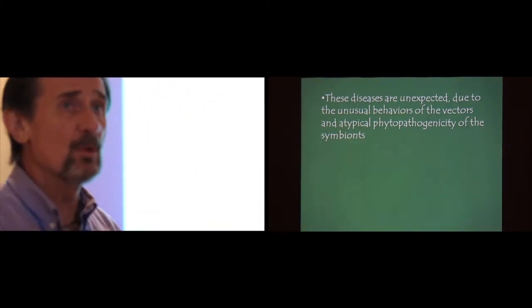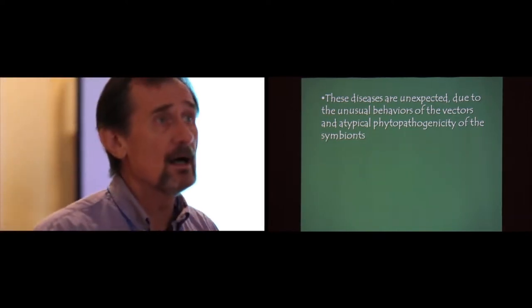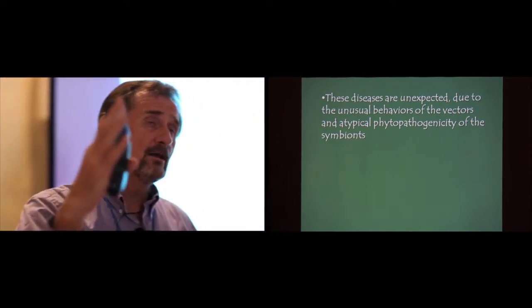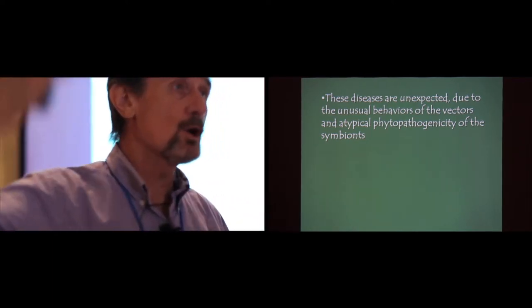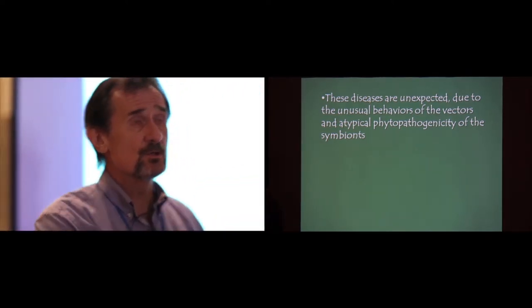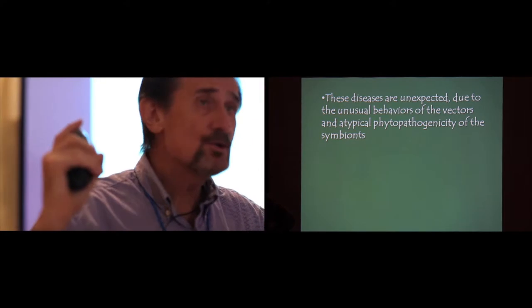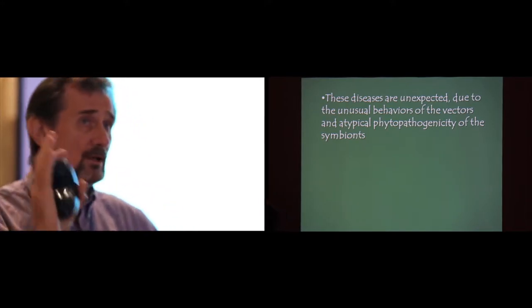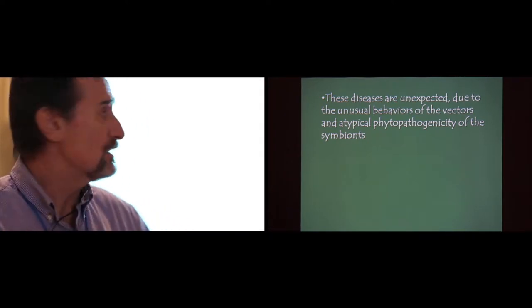As Uri pointed out and other people have alluded to, these are really unexpected problems because of the unusual behaviors of the vectors. Again, Ambrosia Beetles usually go to dead or dying trees. And when you're talking about a disease situation, the implication there automatically is that these vectors are going to healthy trees. So that in itself is unusual. The other unusual thing is that these symbionts, these nutritional symbionts that these insects have an obligate relationship with are usually sap probes. The real unusual thing here is that we've got some phytopathogens here that cause disease on trees. So, not expected at all.